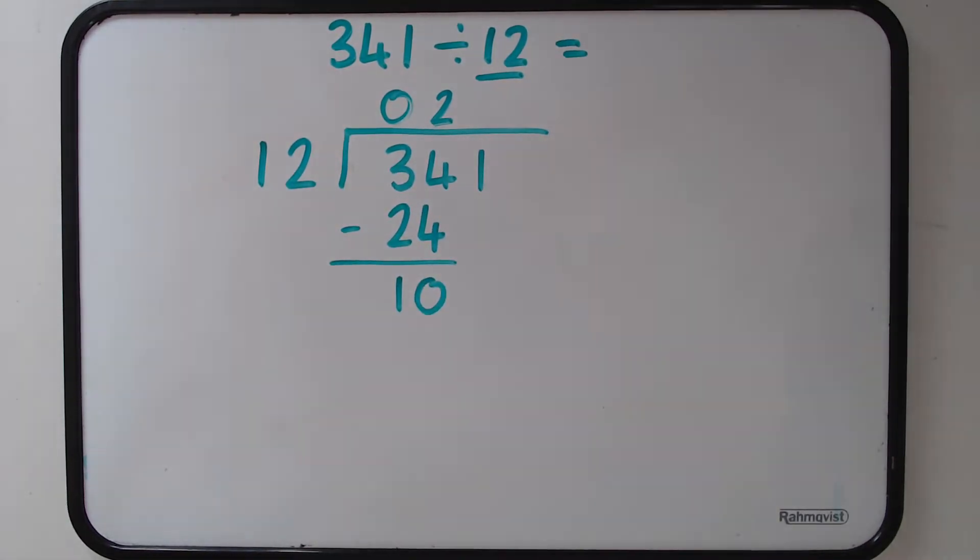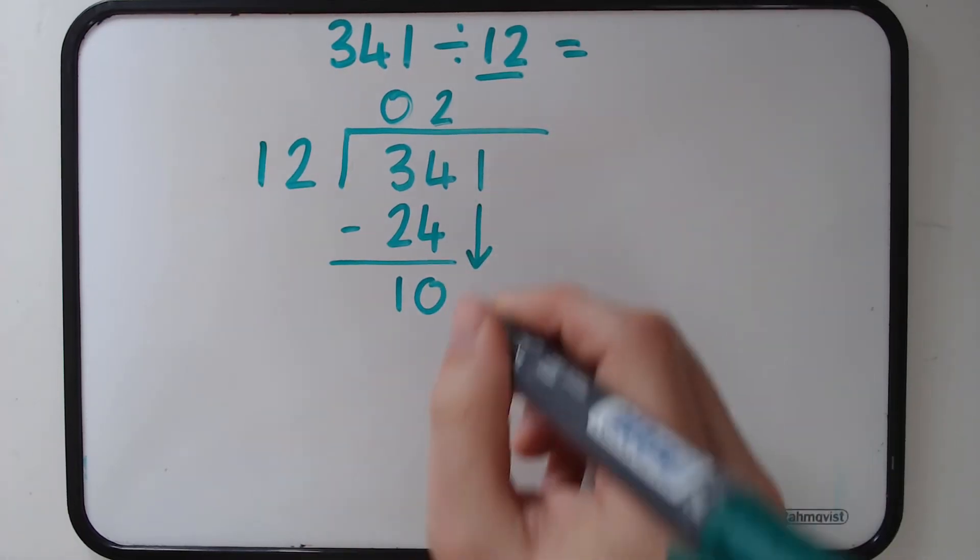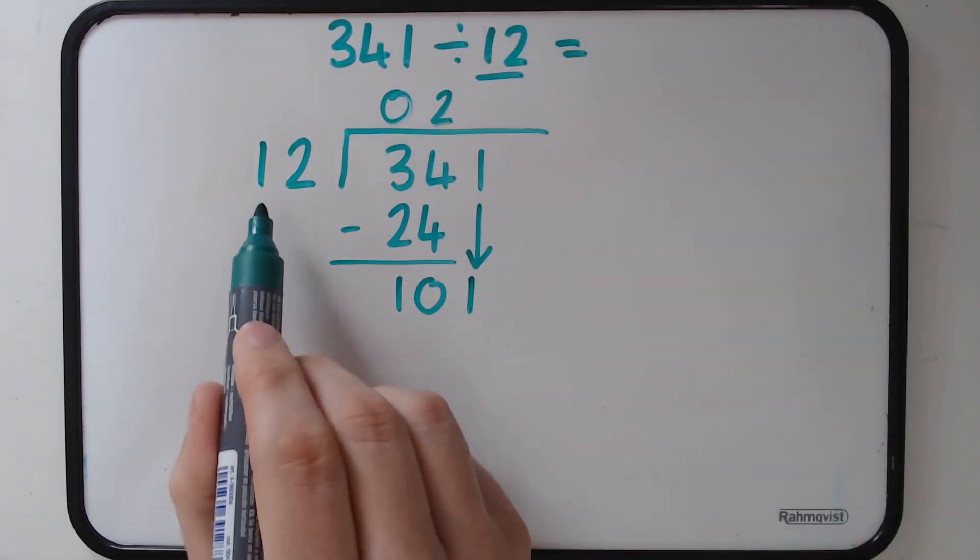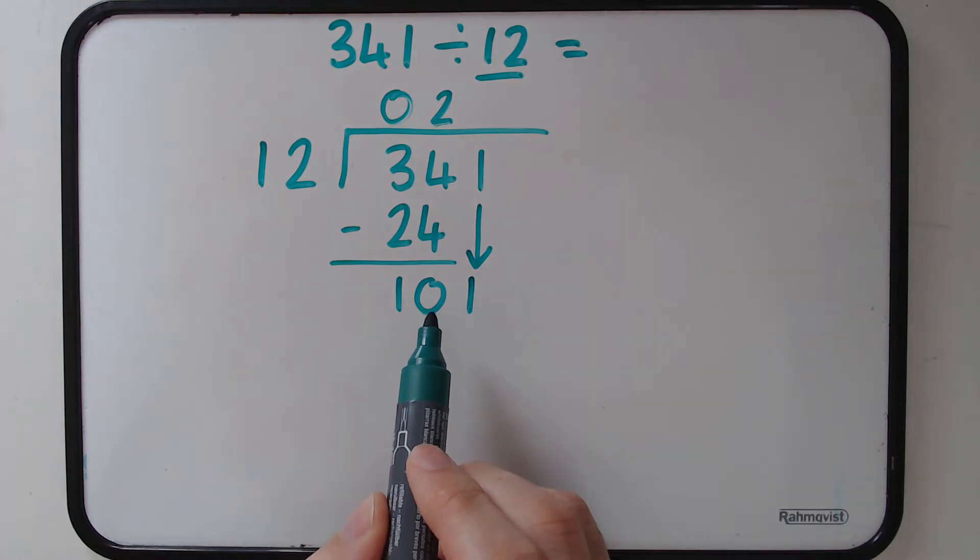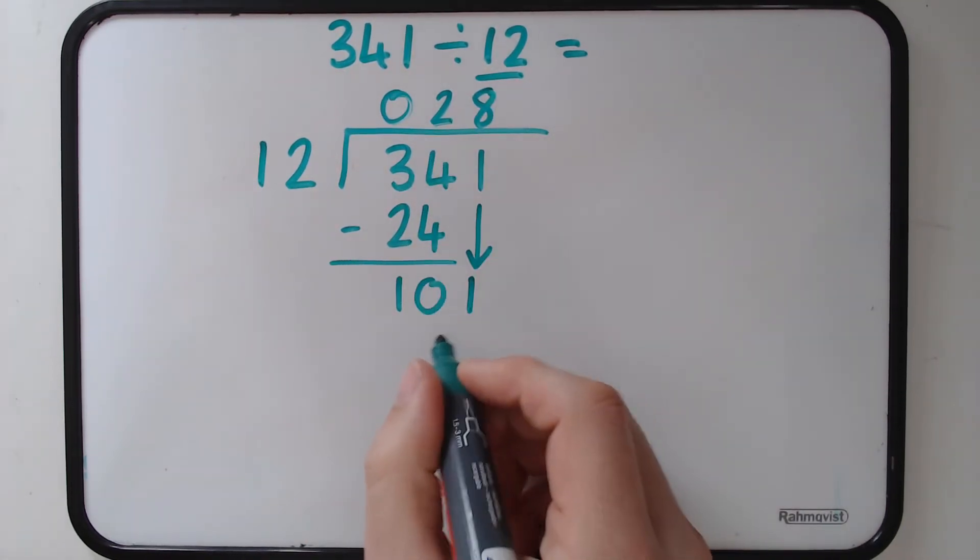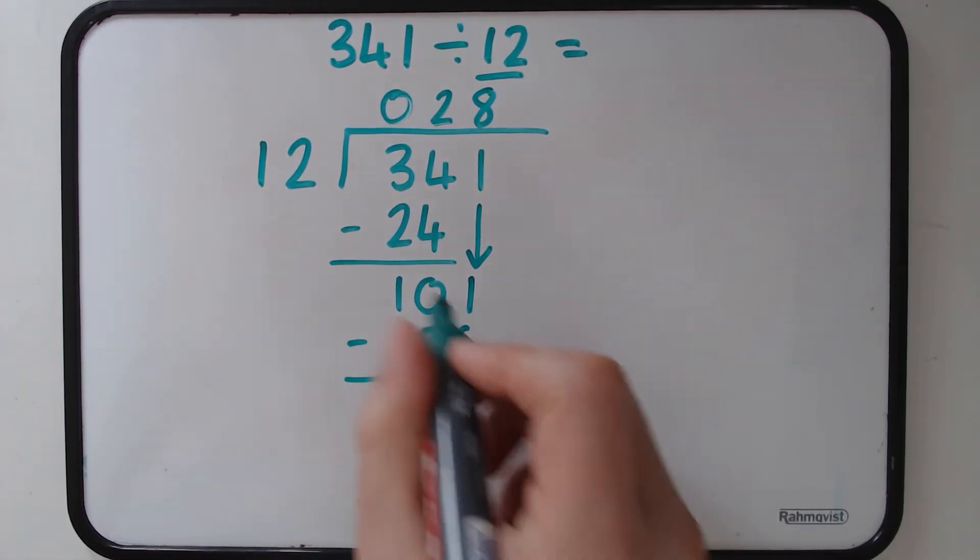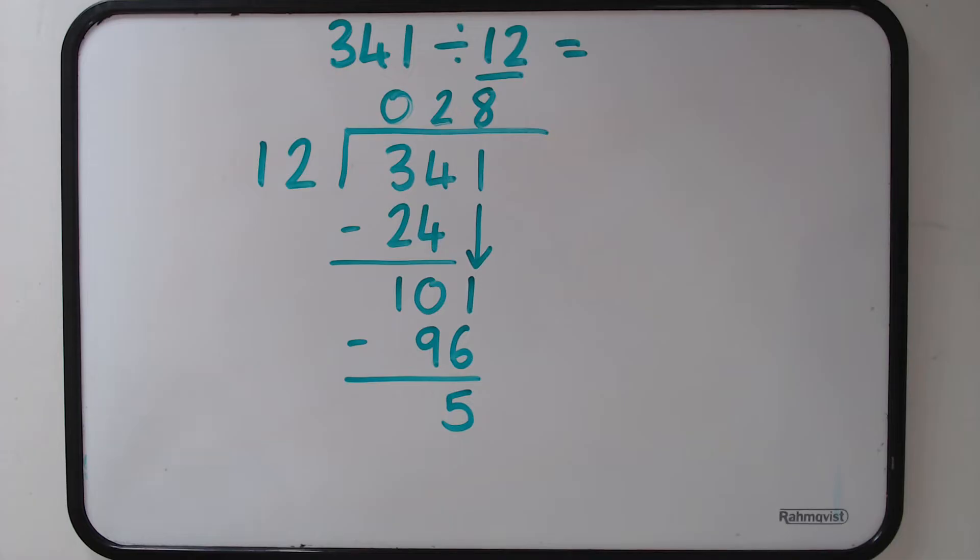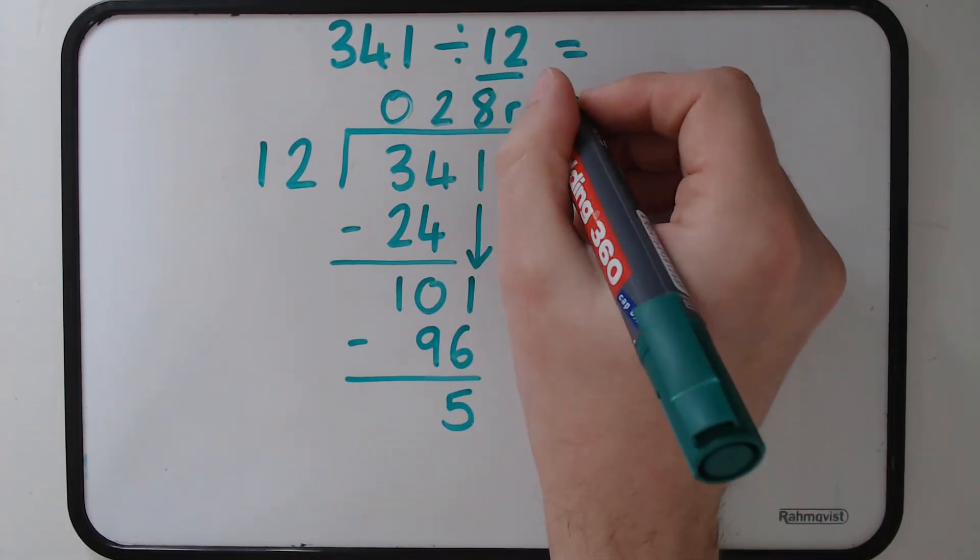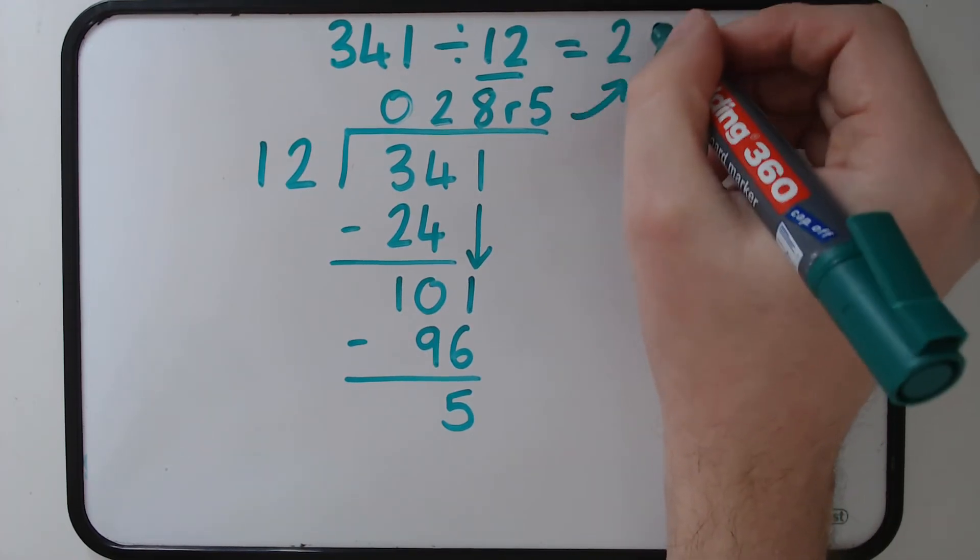Next step, same as before, bringing down the next number. We now have 101. Again, using my 12 times table knowledge, I can fit in 8 12s because 8 12s would give me 96. And then again, all I need to do is 101 take away 96. It will give me the remainder of 5 this time. Remember to put it up at the top. So the answer of 341 divided by 12 is 28 remainder 5.